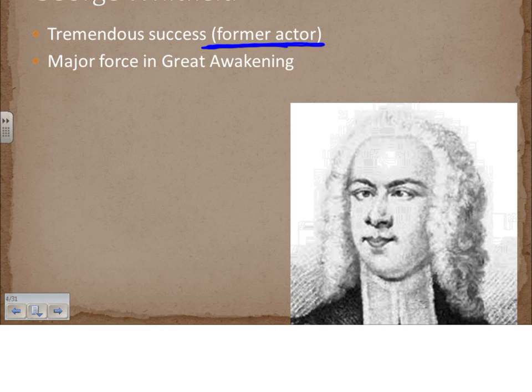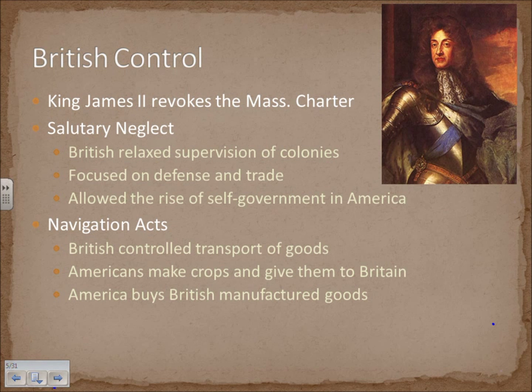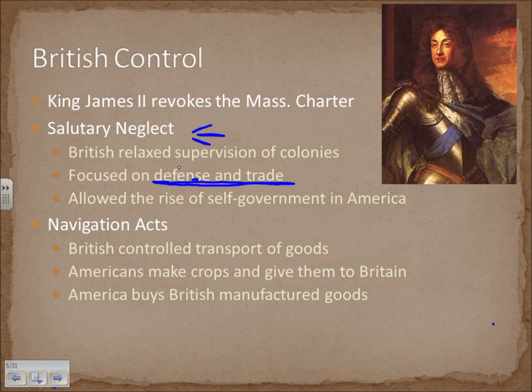King James II revoked the Massachusetts charter, making the area a royal colony under his direct control. However, the king and Great Britain followed a policy of salutary neglect — relaxing supervision of the colonies, focusing only on defense and trade. As a result, the colonies began to govern themselves, and self-government arose in America.